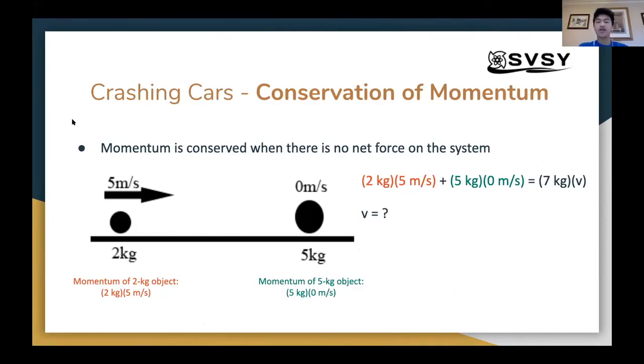So conservation of momentum. This is all about collisions, crashing cars, crashing balls, like crashing anything, it's all about collisions. Conservation of momentum is another important conservation law in physics, and it basically says the momentum cannot be created or destroyed, but there is a condition. The condition is that when there is no net force on the system, meaning if you sum up the forces in a system, if it's equal to zero, then momentum will be conserved.